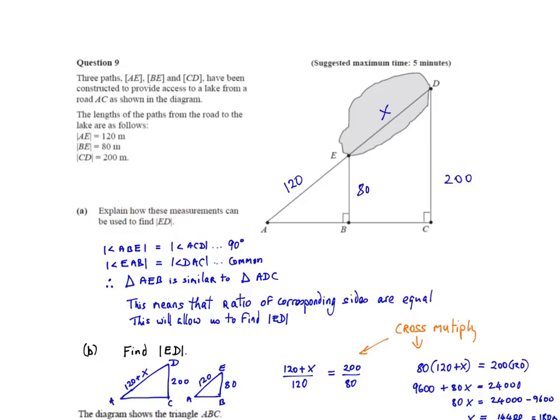So the next question is very similar. You've got three paths, AE, BE, and CD, have been constructed to provide access to a lake from road AC, as shown in the diagram. The length of the paths from the road to the lake are as follows. So these are all the details. Make sure to put these onto the diagram like I've done here. Now, explain how these measurements can be used to find the length of ED. So we want to find the length of ED. How could we use these measurements? So obviously, again, it has something to do with similar triangles. If we know that this smaller triangle is similar to the larger one, then we can use that property of the ratio of corresponding sides being equal.